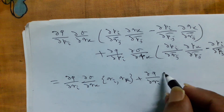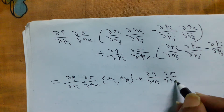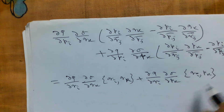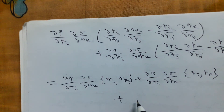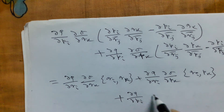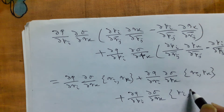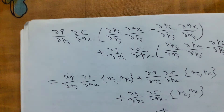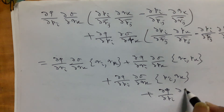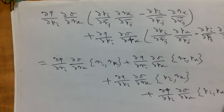We identify: ∂φ/∂qᵢ · ∂σ/∂pₖ times the Poisson bracket {qᵢ,pₖ}, plus ∂φ/∂pᵢ · ∂σ/∂qₖ times the Poisson bracket {pᵢ,qₖ}, and ∂φ/∂pᵢ · ∂σ/∂pₖ times the Poisson bracket {pᵢ,pₖ}.